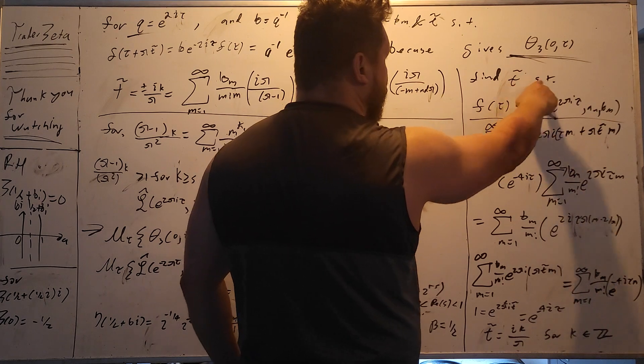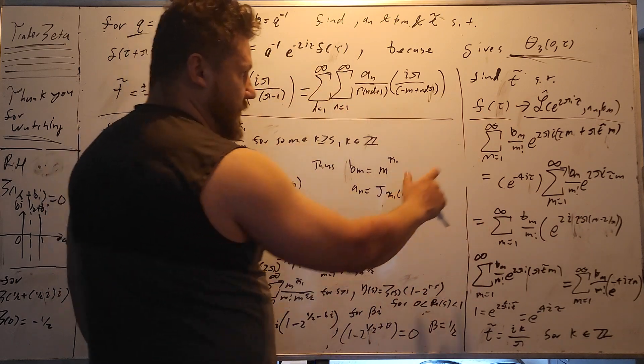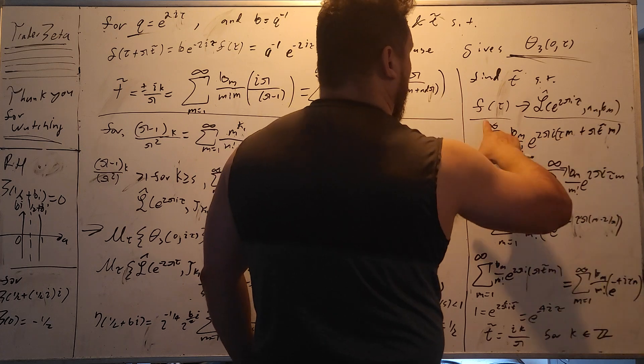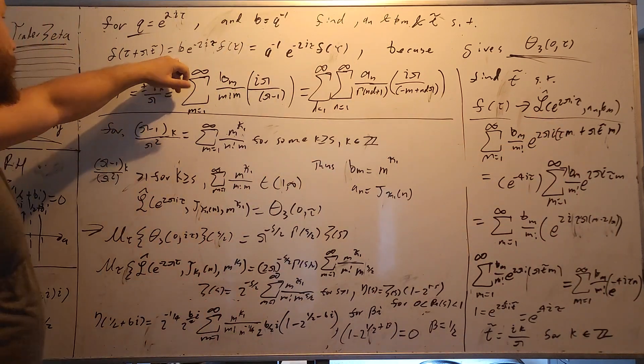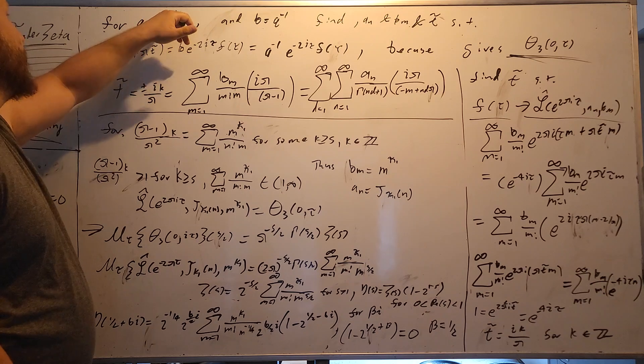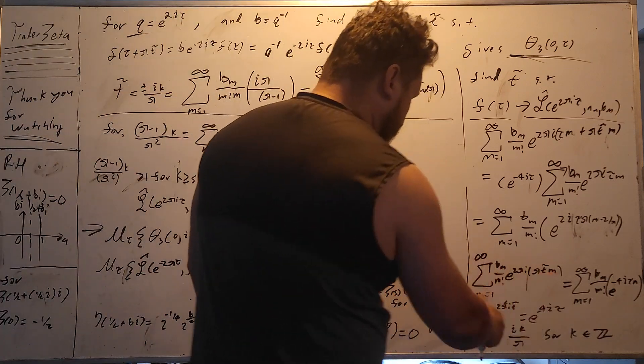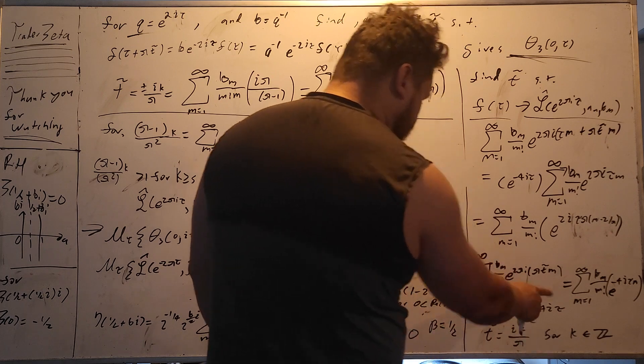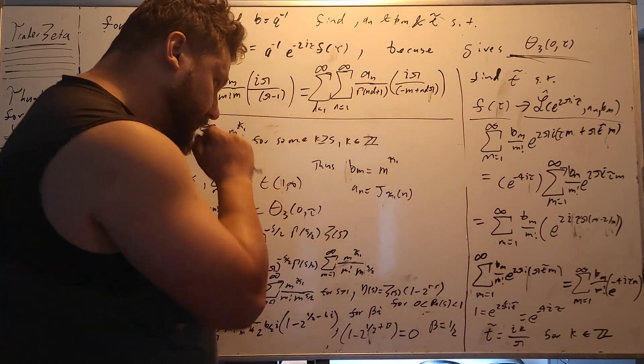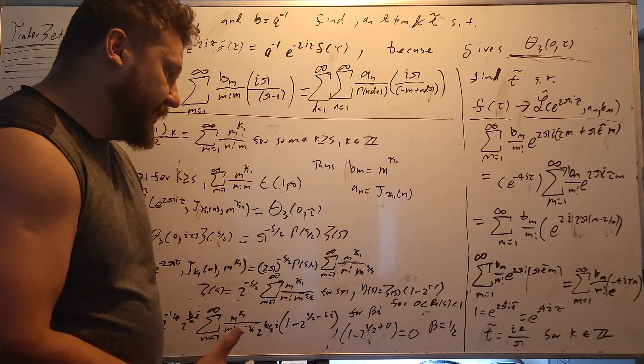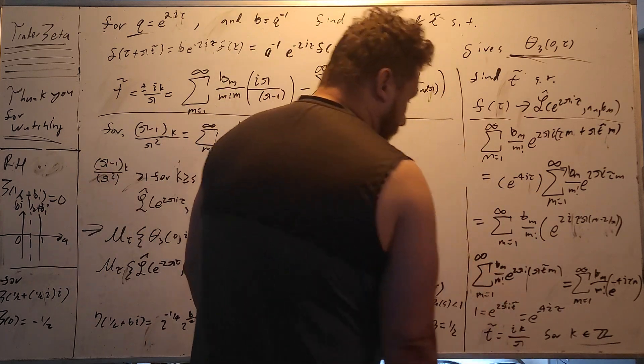So over here, we want to find t tilde such that this functional equation is obeyed. So what we're going to use is the b sub m version, the Fourier coefficients, and we're going to go straight through. We're going to just plug in for f of tau, exponential Lambert series. And for b, we're going to plug in e to the negative 2i tau. And when we do all of this, basic algebra, we get a solution. 1 equals e to the 2 pi squared i t tilde equals e to the negative 4i tau. And the solution to this is actually quite beautiful. It's something that you would actually expect. It's t tilde equals i k, where k is in the integers, divided by pi.